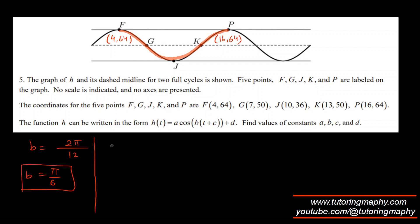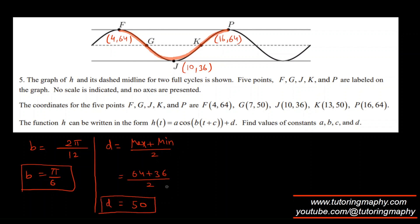The midline D: coordinates of J are (10, 36), and the maximum is 64, minimum is 36. So D = (64 + 36) / 2. That's 100/2 = 50. So D = 50.